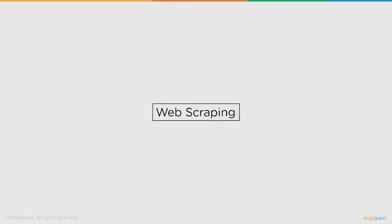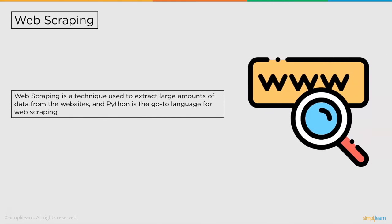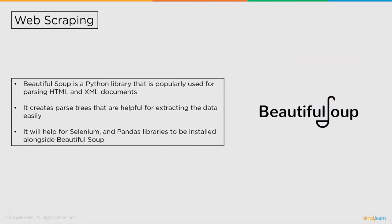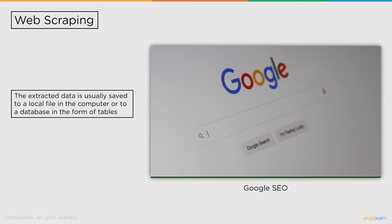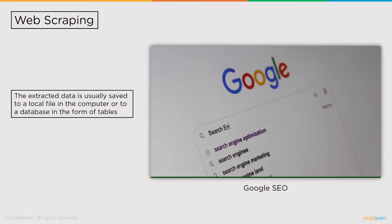Now we will move into web scraping. Web scraping is a technique used to extract large amounts of data from websites, and Python is the go-to language for it. BeautifulSoup is a Python library popularly used for parsing HTML and XML documents. It creates parse trees that are helpful for extracting data easily. It helps to have Selenium and Pandas libraries installed alongside BeautifulSoup so that the data can be structured properly. The extracted data is usually stored in a local file or in a database in the form of tables.